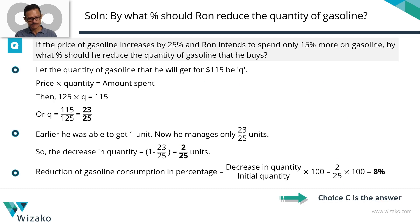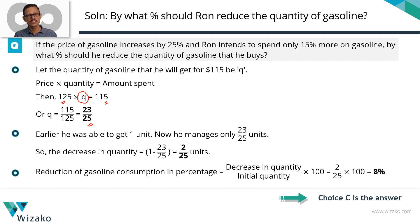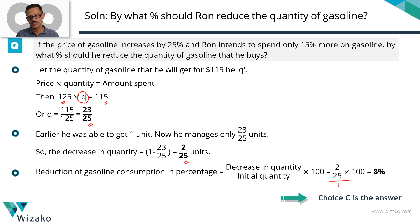To quickly summarize: the new price per unit is $125, and the new amount Ron is willing to spend is $115. The new quantity Q = 23/25. It's gone down by 1 minus 23/25, which is 2/25 units. Percentage decrease = (2/25) / 1 × 100 = 8%. Choice C is the correct answer to this question.